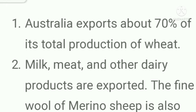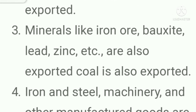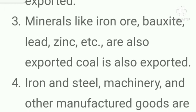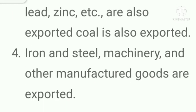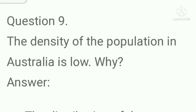Question number eight: Mention the products exported from Australia. Answer: Australia exports about 70 percent of its total production of wheat. Milk, meat, and other dairy products are exported. The fine wool of Merino sheep is also exported. Minerals like iron ore, bauxite, lead, zinc, etc. are also exported. Coal is also exported. Iron and steel machinery and other manufactured goods are also exported.